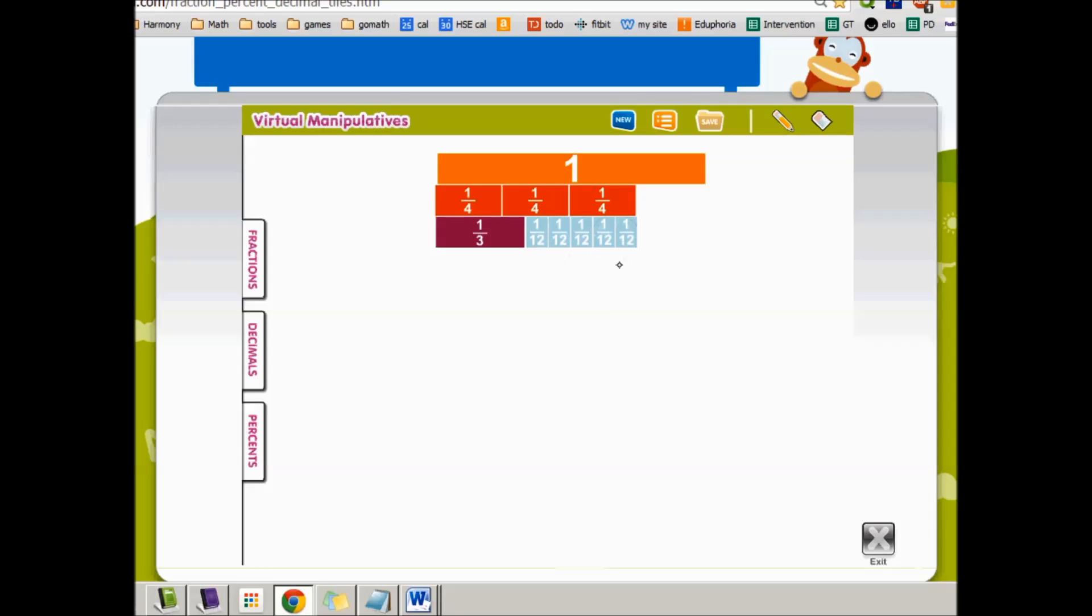So let me try 1 twelfth. Oh, this one is also 5 twelfths. So 3 fourths minus 1 third equals 5 twelfths. 3 fourths minus 1 third is 1, 2, 3, 4, 5 twelfths. Okay. So now we'll move on to the next one.